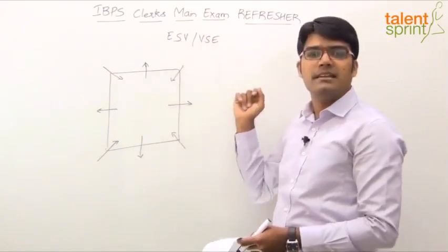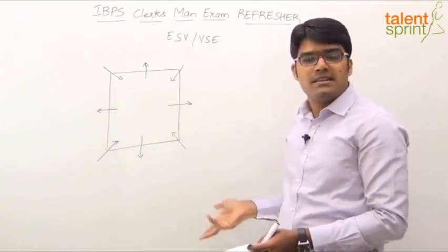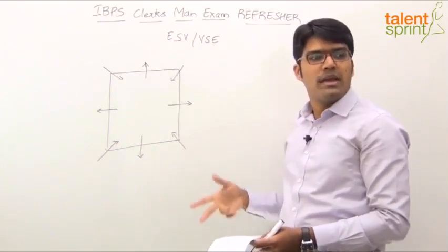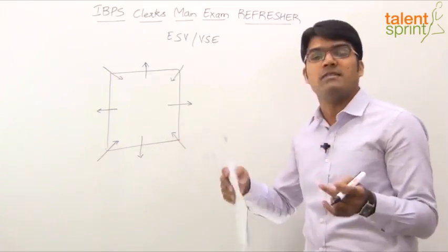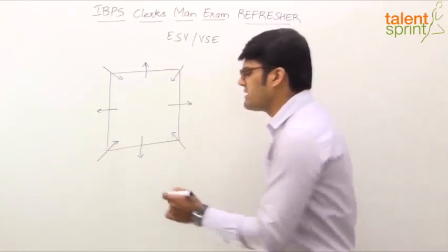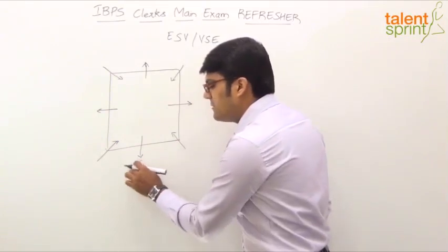S is here between E. Now, since there are two possibilities, let us draw one more circle, one more square. And the next point which he said is, S sits in the middle of one of the sides. Let us assume S is sitting here. S is sitting in the middle.